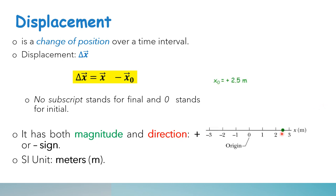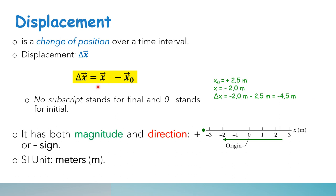Take a look at this first example. This is a particle moving from right to left. The initial position of the particle is positive 2.5 meters and the final position is negative 2 meters. To find the displacement, Δx equals the final position minus the initial position: negative 2 meters minus positive 2.5 meters. So the displacement is equal to negative 4.5 meters.